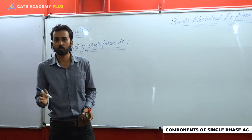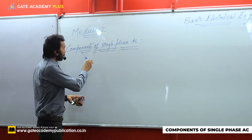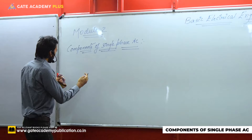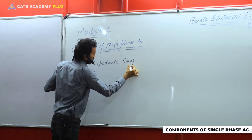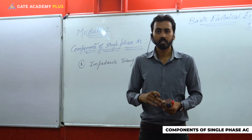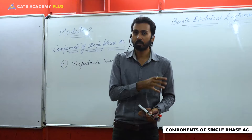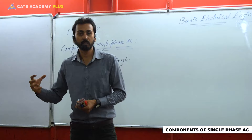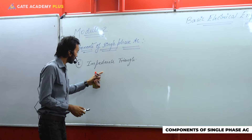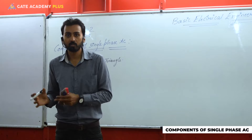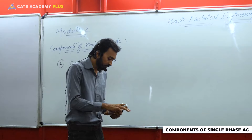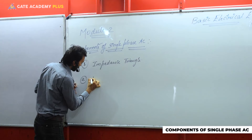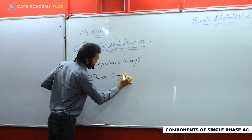I will give you an overview of which topics we are going to cover today. In this particular section on components of single phase AC, the topics we are going to cover are: impedance triangle, resistances, reactances and resultant impedances, and how to express them. Similarly, after that we will be dealing with the second topic, which will be the power triangle.